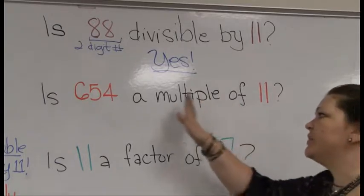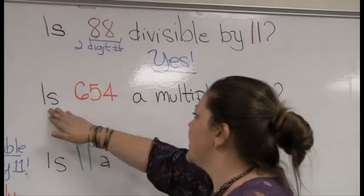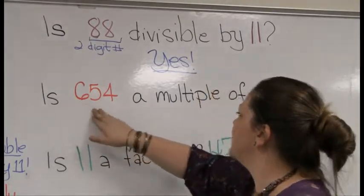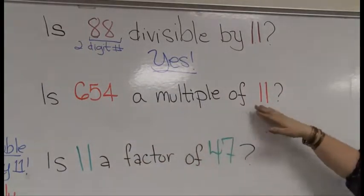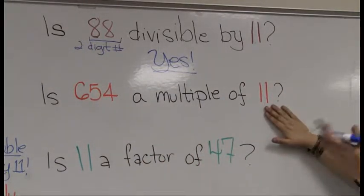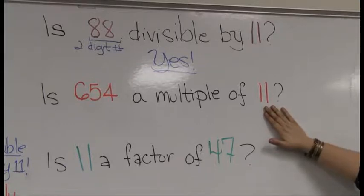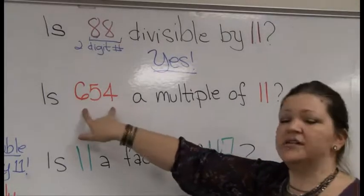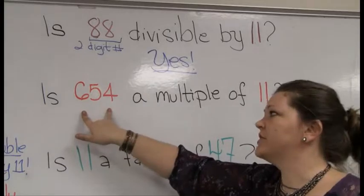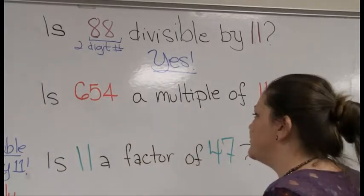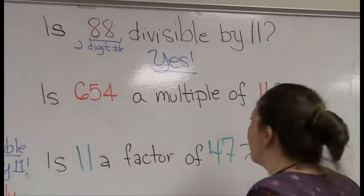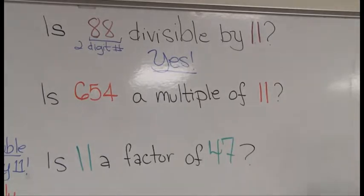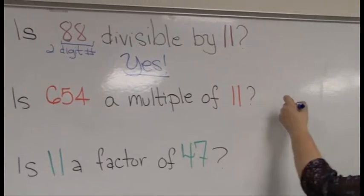But I need you to be really cautious. The next question asks, is 654 a multiple of 11? Everybody wants to look right at it and tell me no, but the fact of the matter is my trick is not going to work here. This is a three-digit number. So you're going to have to divide. I'm really sorry. I'm sorry to my cameraman too. Can you come over here? Let's divide and check it out.